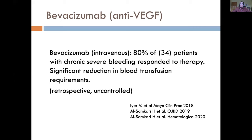Now let's talk about the liver. Liver VMs in HHT are not large AVMs — they're telangiectasia, sometimes in clusters, which we call liver vascular malformations. We don't use the term liver AVMs clinically, as that's a misnomer that confuses other clinicians who might expect a large AVM on ultrasound. What we actually see in HHT is telangiectasia, and the number of them determines whether disease is mild, moderate, or severe.